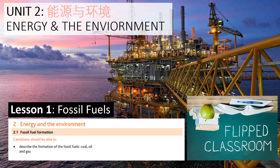Hello everyone and welcome back to the Environmental Management Flipped Classroom series. Today we'll start our second unit of the course, which is Energy and the Environment. This unit will focus on our society's great need for electricity and other energy-related products. We'll discuss topics such as the different energy sources that we use, their different impacts, and how we can conserve energy and manage these resources more effectively. Looking at the official IGCSE syllabus, our first class today will focus on fossil fuels and their formation.